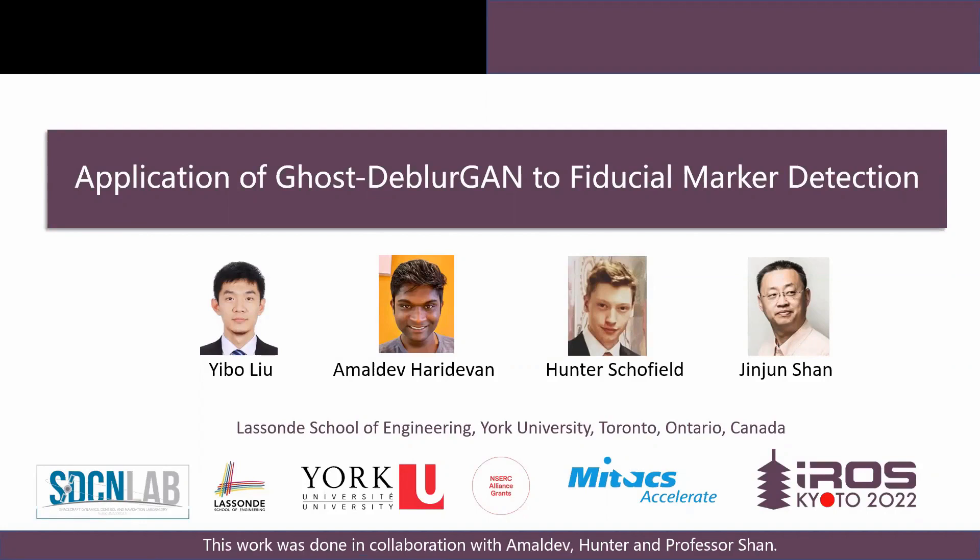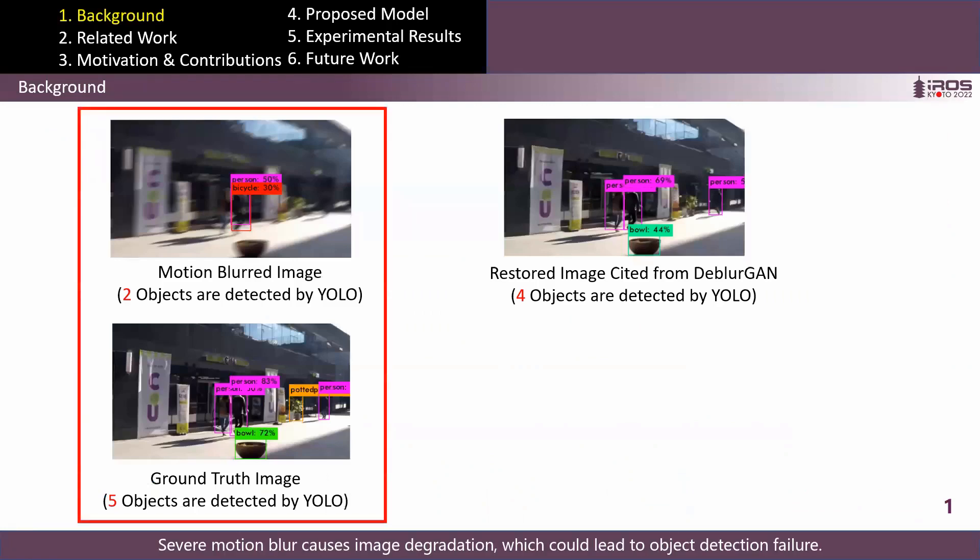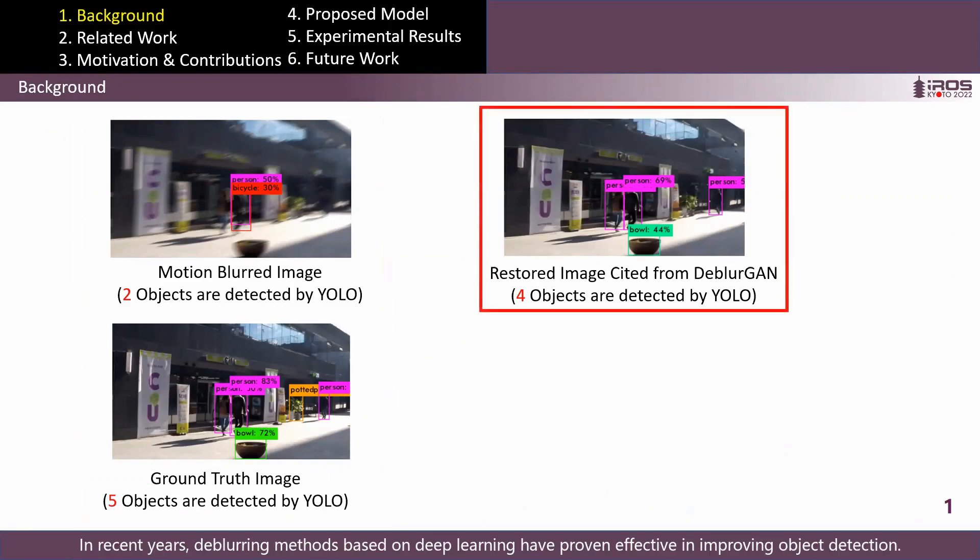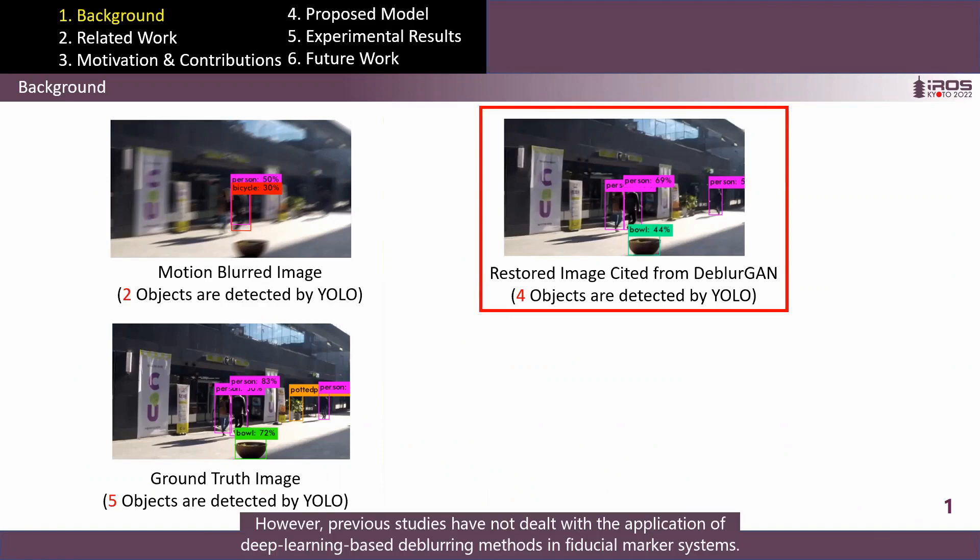This work was done in collaboration with Amal Hunter and Professor Shen. Severe motion blur can cause image degradation, which could lead to object detection failure. In recent years, deep learning methods have proven effective in improving object detection. However, previous studies have not dealt with the application of deep learning based deblurring methods in fiducial marker systems.